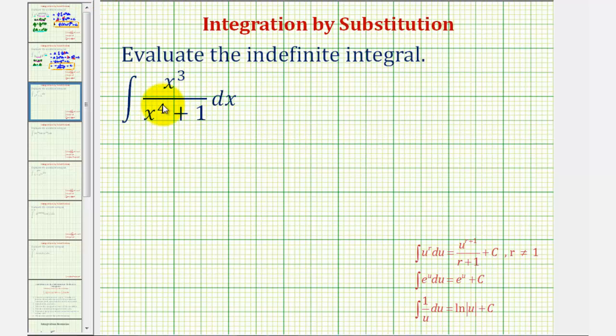So notice in this case, if we let u be equal to x to the fourth plus one, then using this equation, our denominator is now just u.